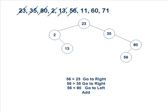The next number we take is 56. We compare 56 with 23 — it is greater, so we move to the right hand side. Moving further right we reach 35, then find 80. Since 56 is less than 80, the lesser value is placed on the left hand side of the compared node, so 56 is placed as the left child of 80.